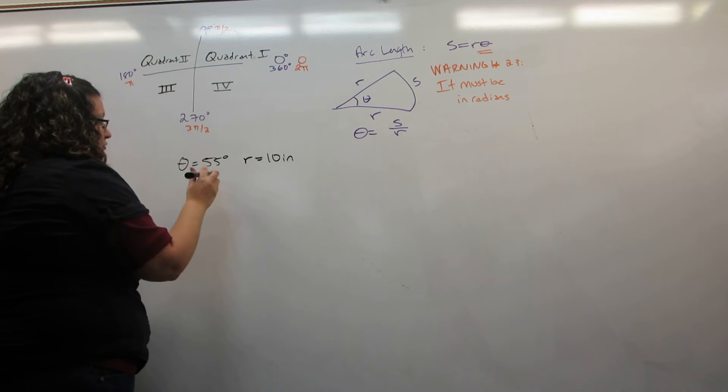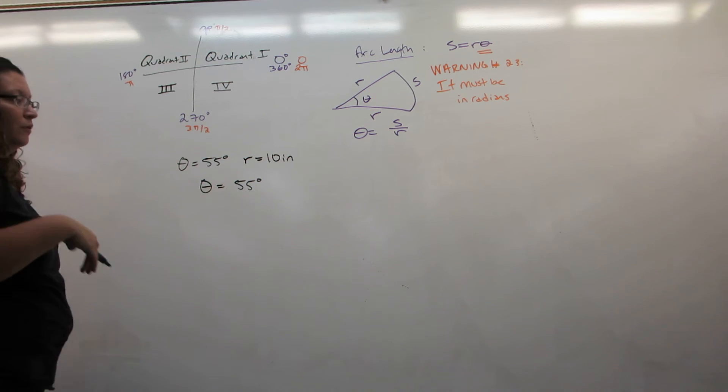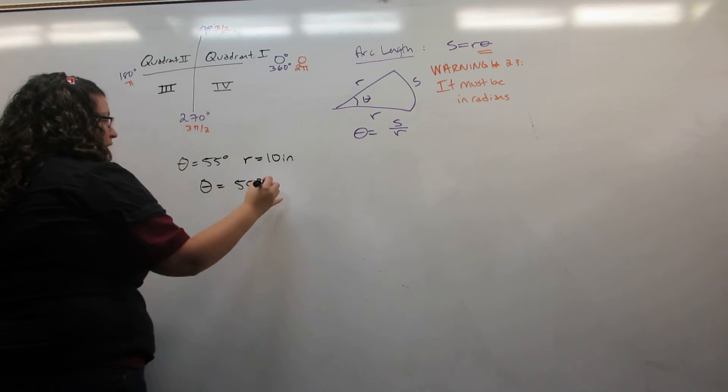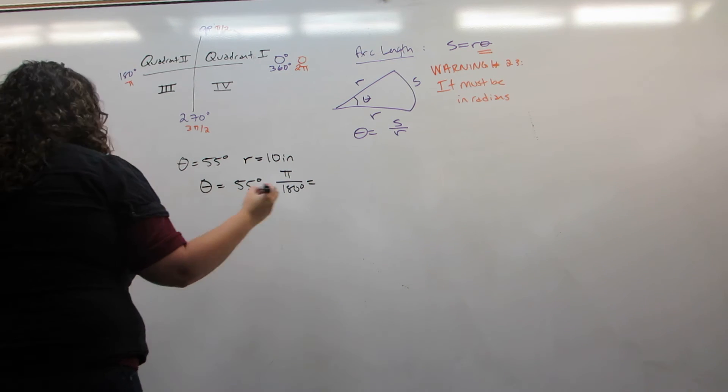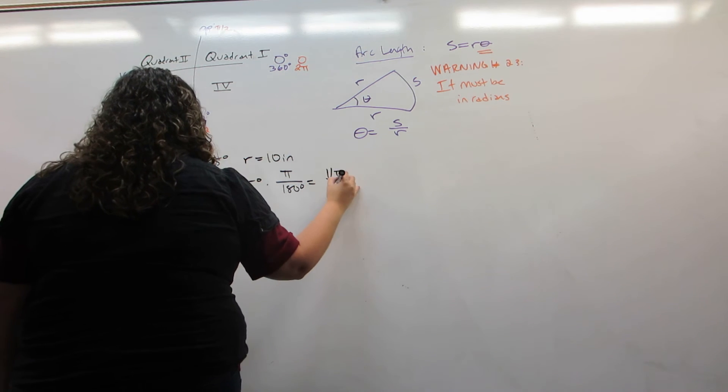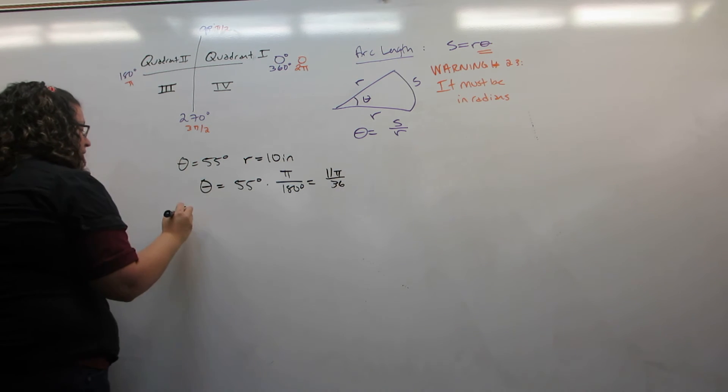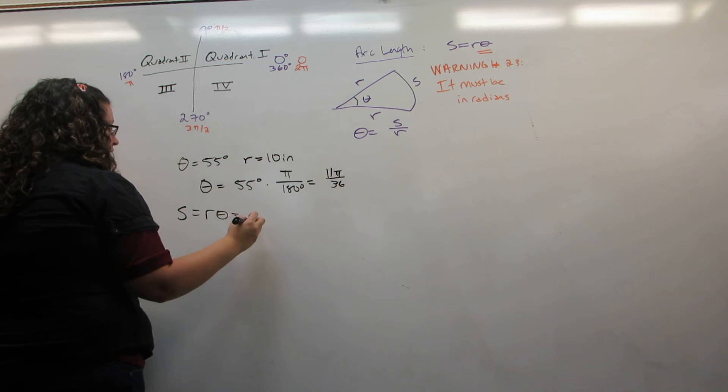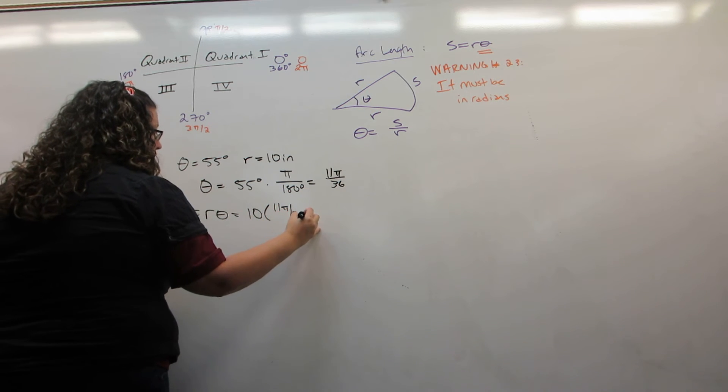It must be put into radians. So first, we're going to transform this degrees into radians by multiplying by pi over 180 degrees. This becomes 11 pi over 36 radians. And now, s, which equals r theta, will be 10 times 11 pi over 36.